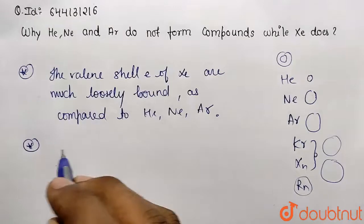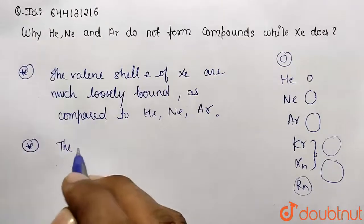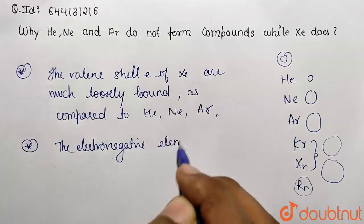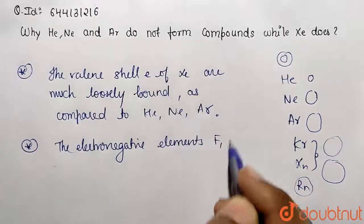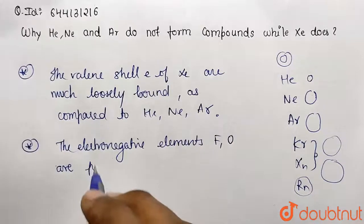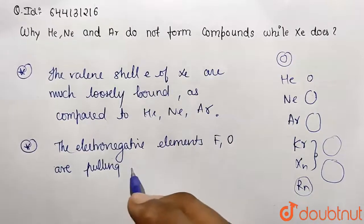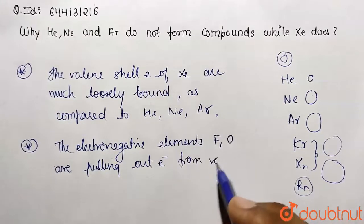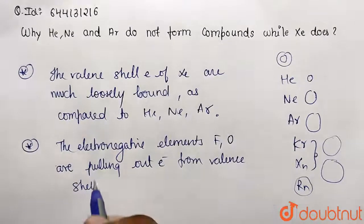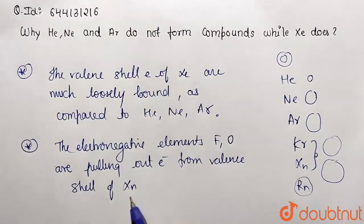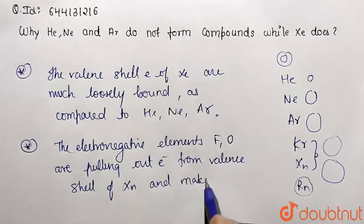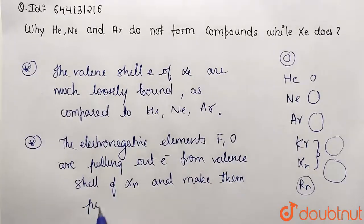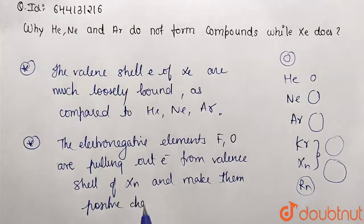We can also mention that the electronegative elements like fluorine and oxygen are pulling out electrons from valence shell of xenon and make them positive charge and can form compounds.